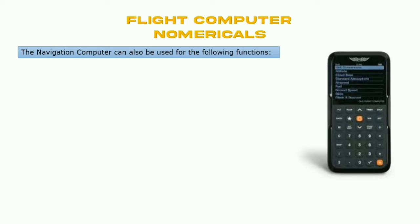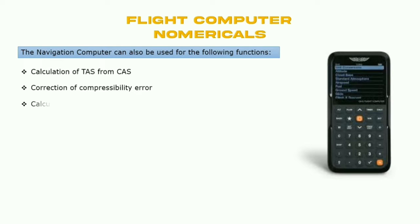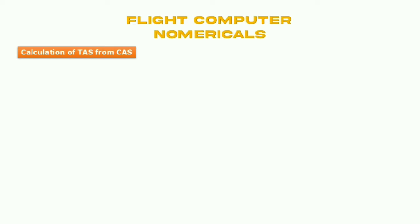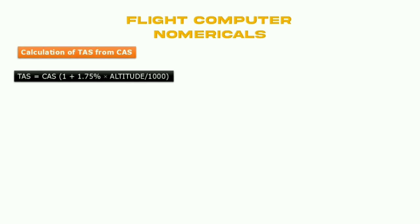The navigation computer can be used for the following functions: calculation of TAS from CAS, correction of compressibility error, calculation of TAS from Mach number, calculation of true altitude from indicated altitude, and calculation of density altitude from pressure altitude. We'll look at the calculation of TAS from CAS.